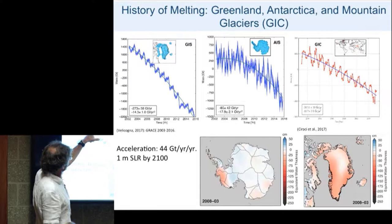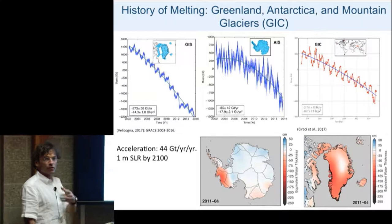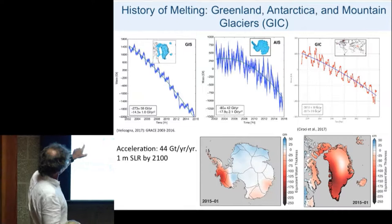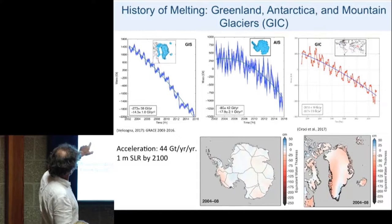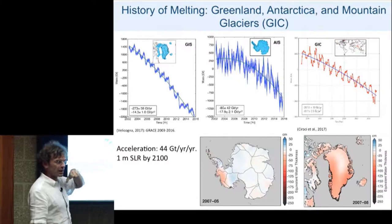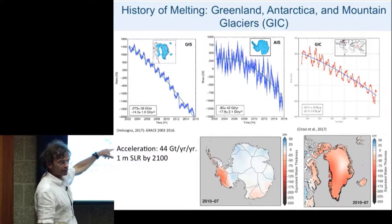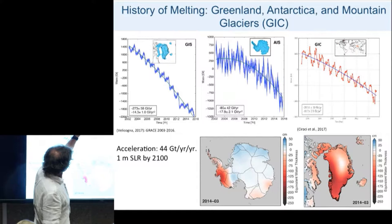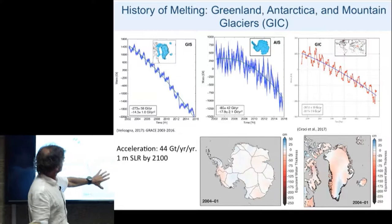About 270 gigatons per year lost from Greenland, getting close to one millimeter of sea level rise. That curve is not a straight line — it has a bend because mass loss is increasing every year. For Antarctica the slope is not as large, and the signal is more jagged because it's seven times the size of Greenland and dominated by natural variability in precipitation. But you can clearly see Antarctica also losing mass — and in fact accelerating faster than Greenland.